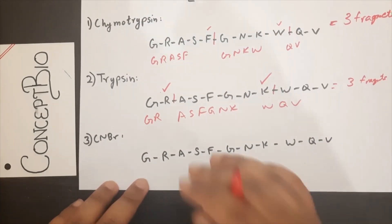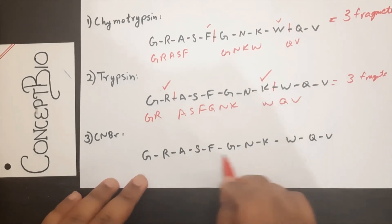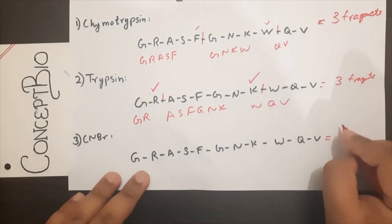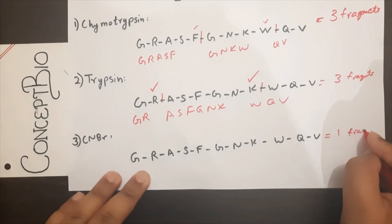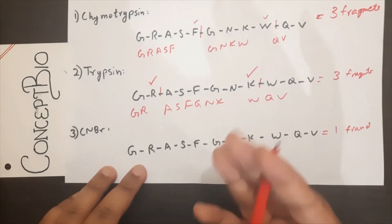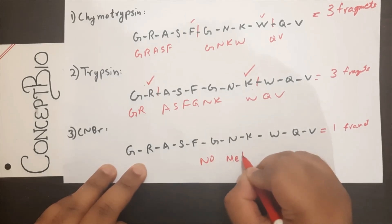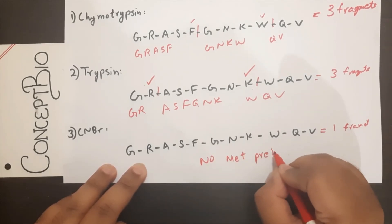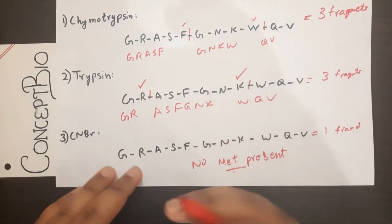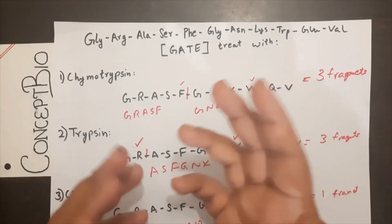Finally, cyanogen bromide attacks the carboxyl end of methionine. Is there any methionine in this chain? There is no methionine, so cyanogen bromide has nothing to attack and cleave. You would get only one fragment — the full, uncleaved peptide chain. No methionine present means no cleavage occurs.